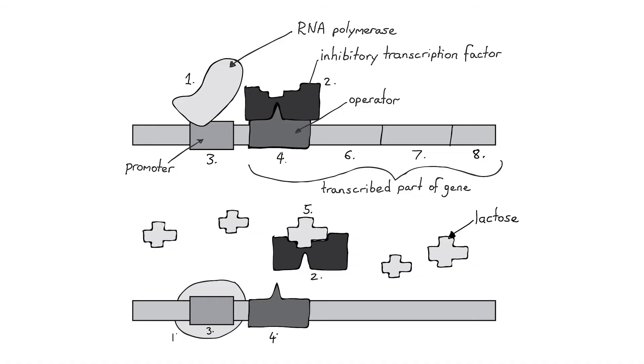Alternatively, when there is lots of lactose present and the E. coli could use it as a fuel, we need those genes to be transcribed so that we can end up with the enzymes that are needed. In this instance, the lactose entering the cell binds to the repressor protein that is bound to the operator. This binding of lactose to the repressor changes the conformation of that repressor, which means it can no longer bind to the operator, so it comes off the operator.